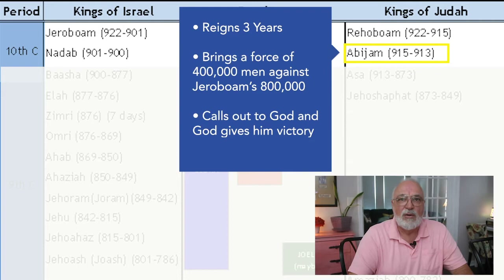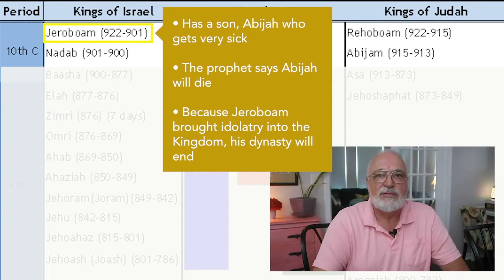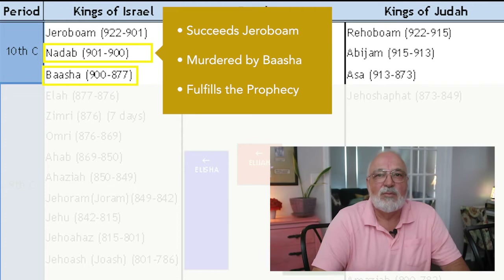Abijan calls out to God and God gives him the victory. Jeroboam also has a son Abijah who he loves dearly, who gets sick. He sends his wife to the prophet to ask if he will survive, and the prophet tells her the son will not live, and that because Jeroboam has brought idolatry into the northern kingdom, his dynasty will also die. When he dies, his son Nadab succeeds him. Nadab is murdered by Basha after one year, and Basha goes on to kill all the family of Jeroboam, fulfilling that prophecy.